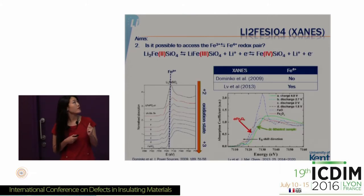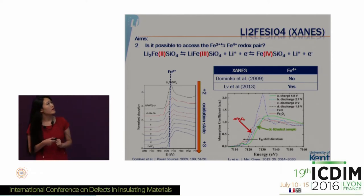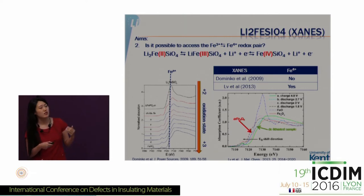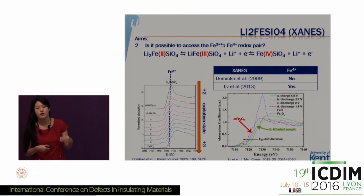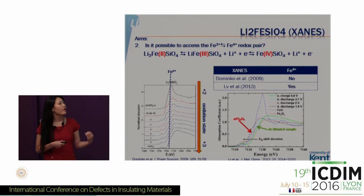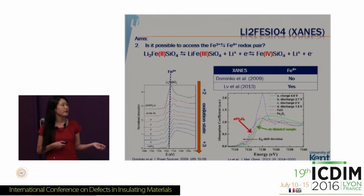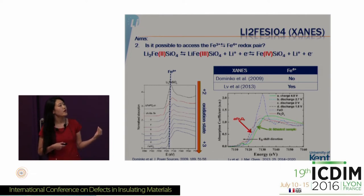We also looked at XANES data from other literature. In 2009, Domenico Rubert, who has done quite a lot of in-situ XANES battery work — not only lithium iron silicate but also lithium-sulfur batteries — said he did not see any Fe4+, only the oxidation of Fe2+ to Fe3+. However, another group confirmed Fe4+ by comparison with Mössbauer spectroscopy, arguing they observed an E0 shift to higher energy beyond the Fe3+ reference after lithium extraction.